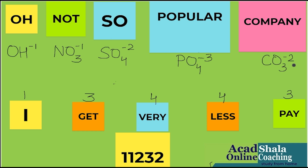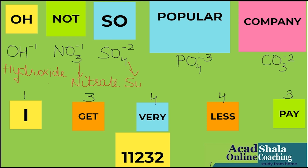One thing is left — I also have to write the names. OH is known as hydroxide. This is known as nitrate. This is known as sulphate. This is known as phosphate. And the last one is carbonate. I can remember this for a longer period of time.